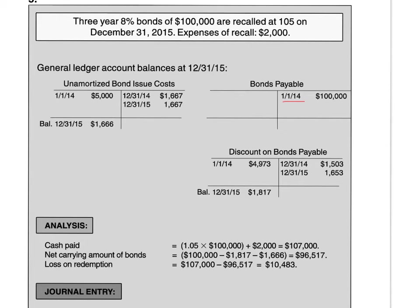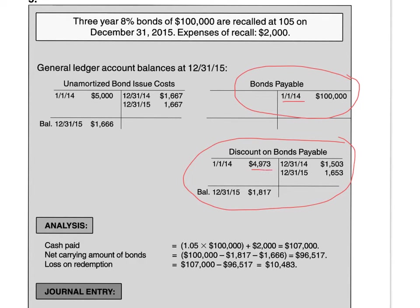Expenses to recall amounted to $2,000. The first thing you have to do is evaluate all the accounts that are attributed to the bonds at this point. Take a look at bonds payable — this account does not change. We have a term bond that matures at lump sum, so that amount will not be changing during the term of the bond. Discount on bonds payable has been amortized; we started with roughly $4,900 and we have two years that have been amortized. You have to make sure that at the time of bond refinancing, recall, or redemption, your discount amortization is up to date.